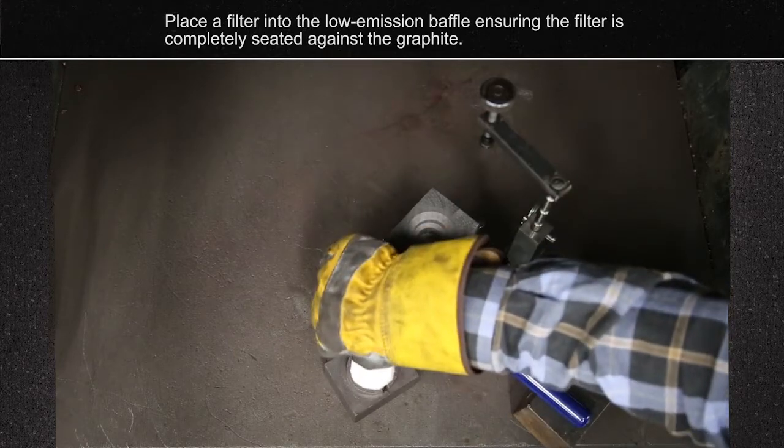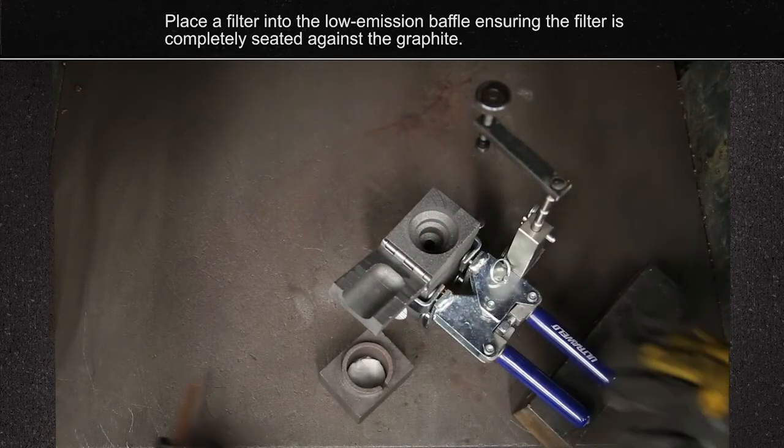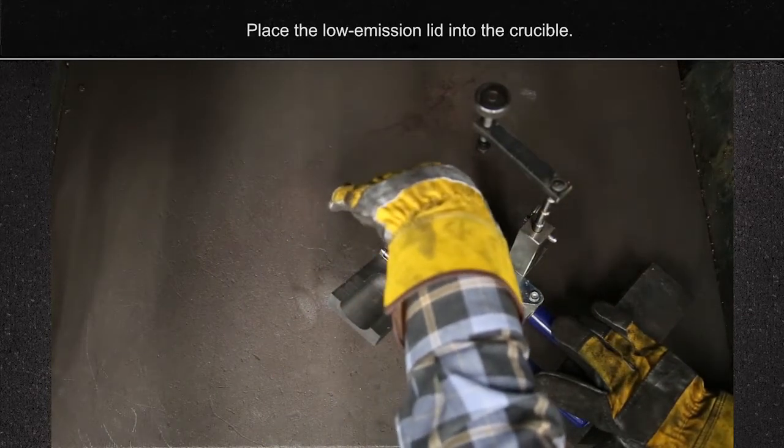Place a filter into the low emission baffle, ensuring the filter is completely seated against the graphite. Place the low emission lid into the crucible.